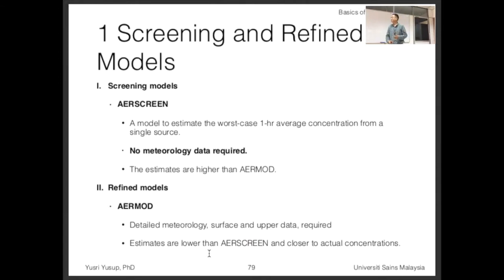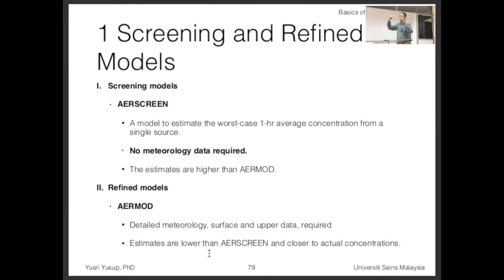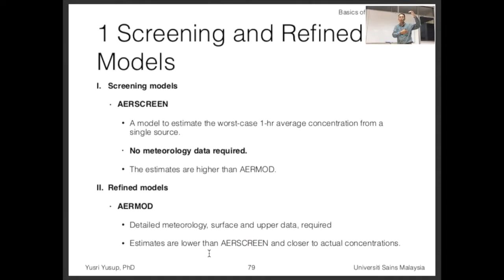The problem is that most of the time when you run the screening model, it's not going to meet regulatory standards — the values will be higher because it gives the worst case. When values are higher, you have to go to the refined model, which takes into account more parameters and should be more accurate. But if you run the screening model and the result is already lower than the standard, you don't have to proceed to the refined model. The refined model is AERMOD, and AERSCREEN also uses AERMOD but with many assumptions.